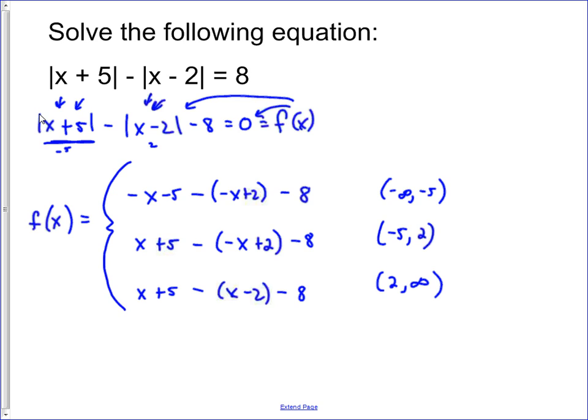This becomes plus, plus, and a negative. You get negative x plus x, and so inside this region, the value is always going to be negative seven. If you do this one, it's a plus and a minus. You're going to end up with two x, and then you're going to have five minus two minus eight, which is negative five.